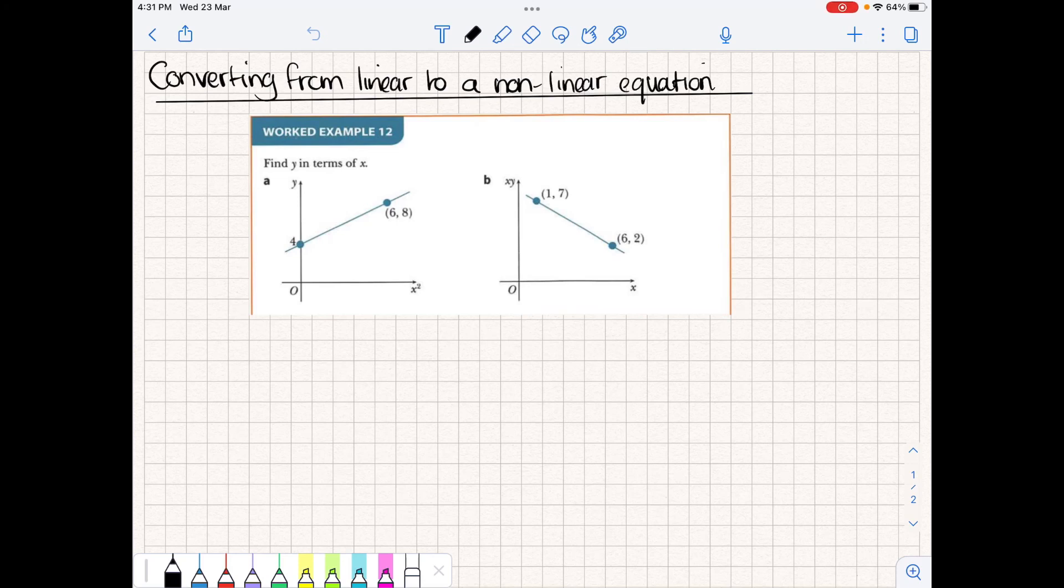If we want to convert from a linear back to a nonlinear equation, we either have to be given a table of values or we need to be given some kind of graph. So here we've been given the graph of two nonlinear equations which have been converted and we need to convert them back to their form.